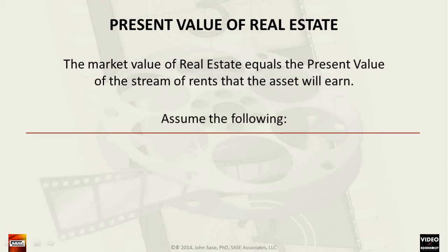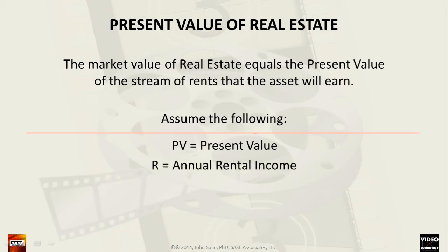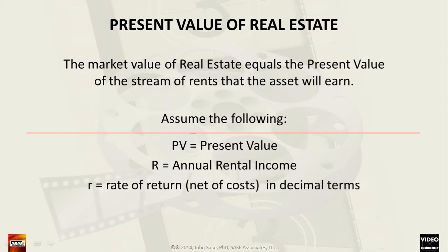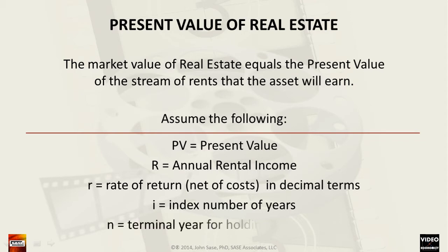To do this, we use the following symbols. Large PV is the present value. Large R is the annual rental income. Small r is the rate of return in decimal terms. Small i is the index number of years. And small n represents the terminal year for holding the property.